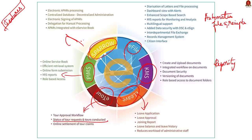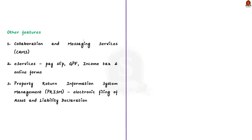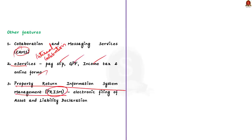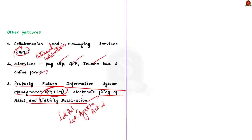E-Office also contains Collaboration and Messaging Services (CAMS) for internal collaboration and messaging; e-Services for integration of various services such as payslip, GPF, income, and online forms; and the Property Return Information System Management (PRISM) for electronic filing of asset and liability declarations in accordance with the Lokpal and Lokayukta Act 2013. E-Office is essentially a substitute for physical offices.